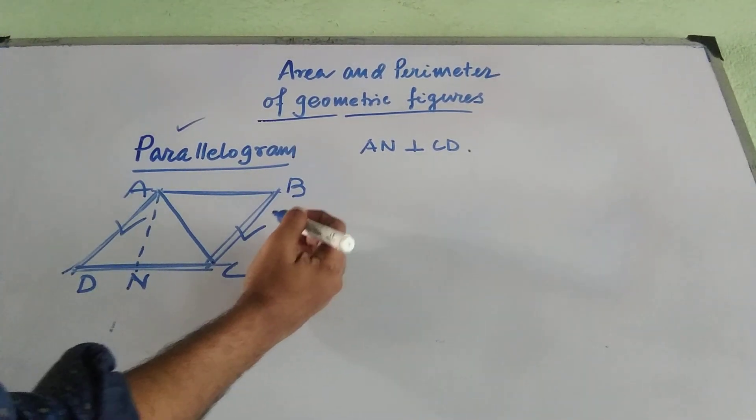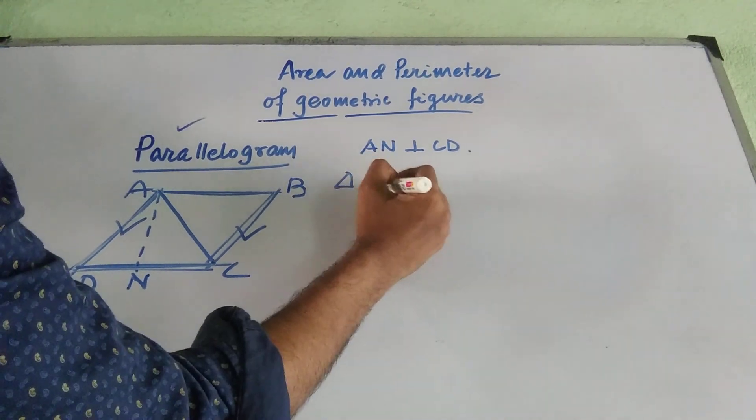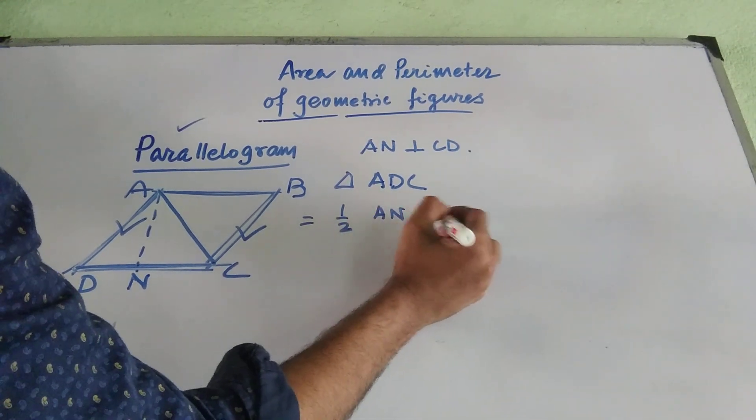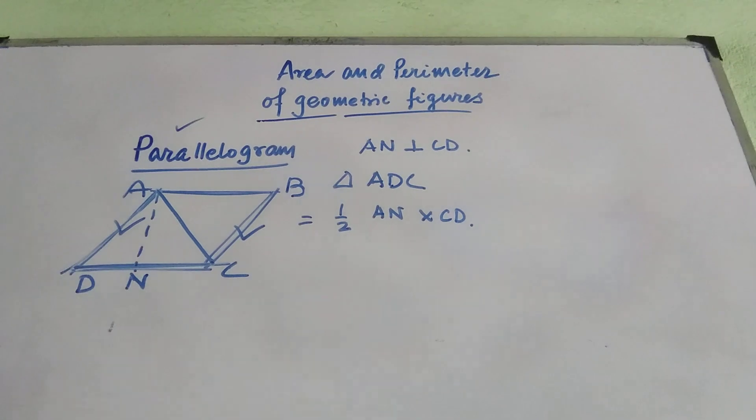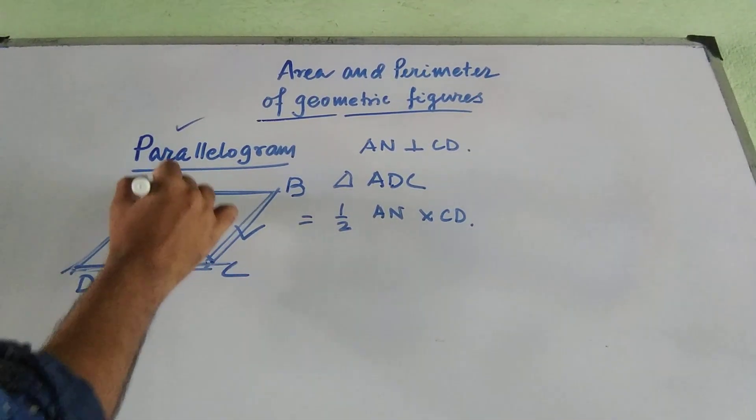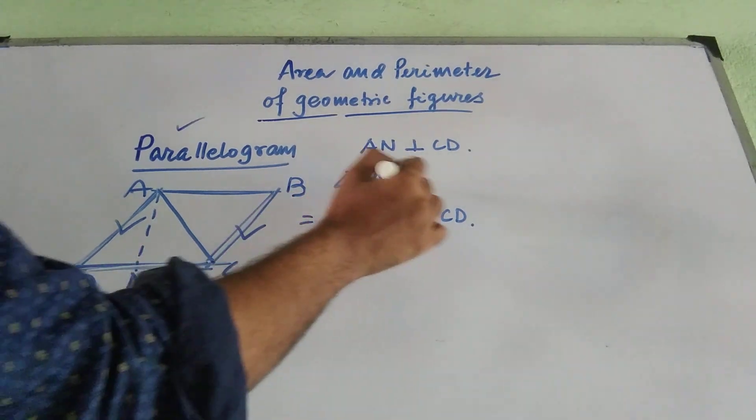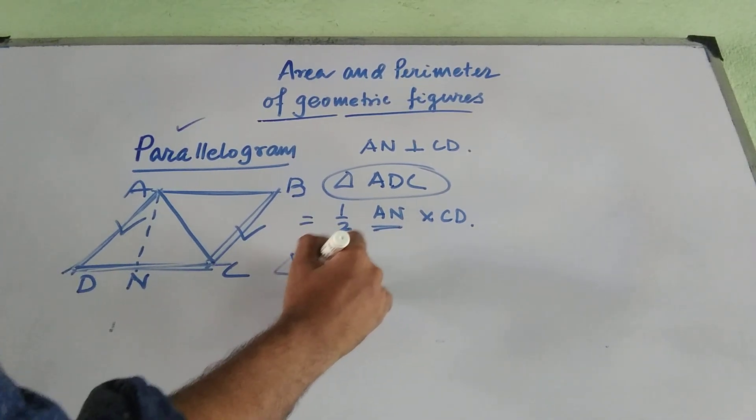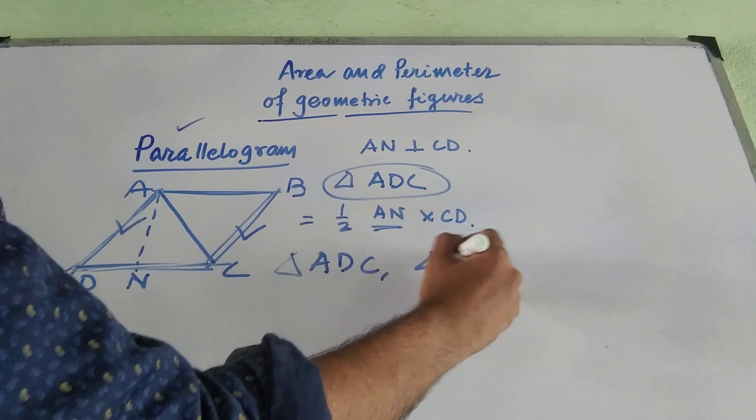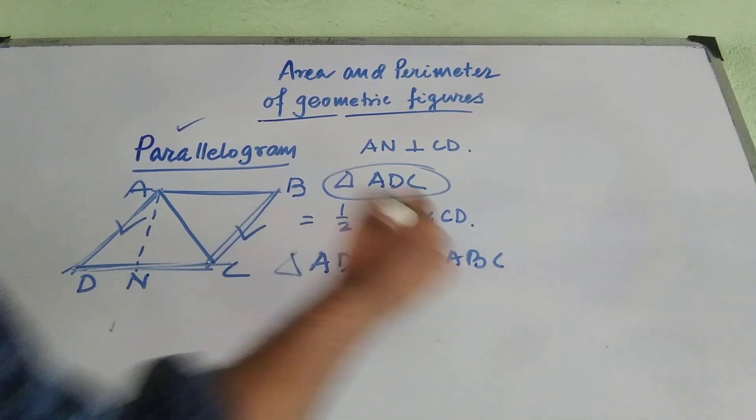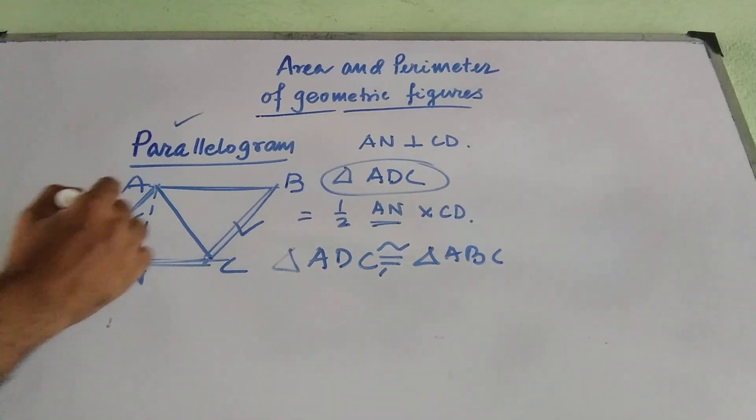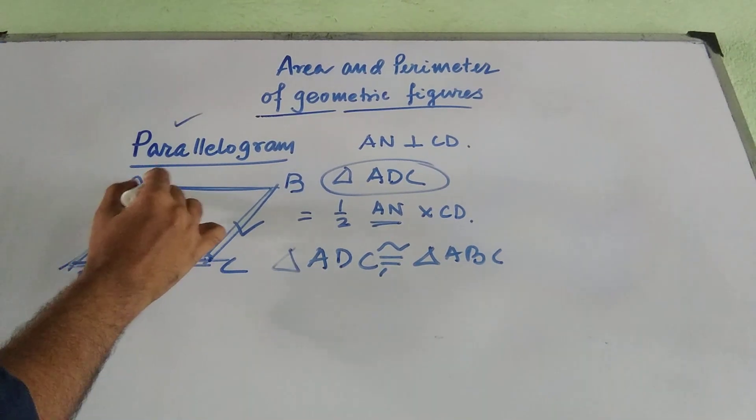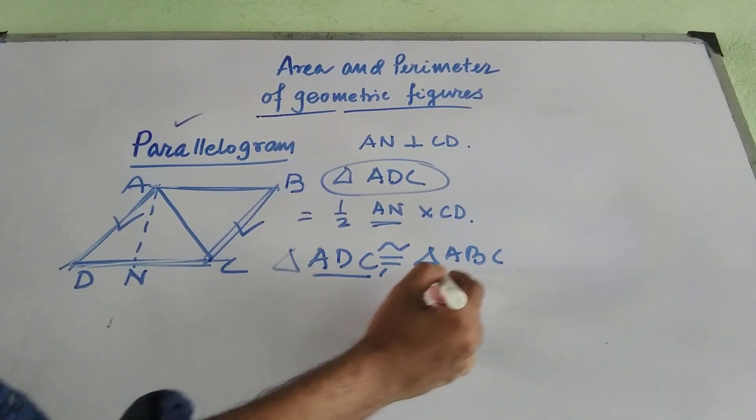Now, from the area formula of a triangle, we know triangle ADC equal to half of AN into CD, right? Half of base, that is CD, into the perpendicular length drawn from the opposite vertex, that is ADC. But from the figure, you can understand that triangle ADC and triangle ABC, they are basically congruent. Congruent means their area will be same. That means, this diagonal AC has separated the parallelogram into two equal triangles, they are ADC and ABC.